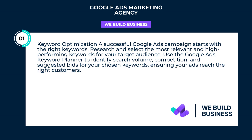Keyword optimization: A successful Google Ads campaign starts with the right keywords. Research and select the most relevant and high-performing keywords for your target audience. Use the Google Ads Keyword Planner to identify search volume, competition, and suggested bids for your chosen keywords, ensuring your ads reach the right customers.